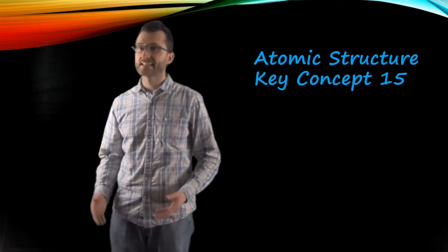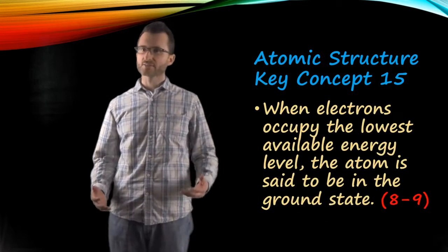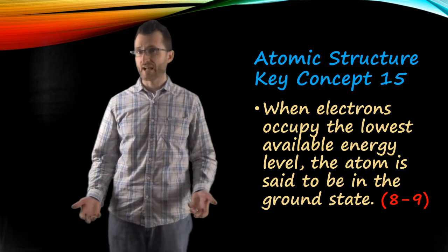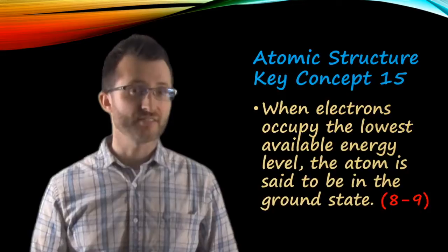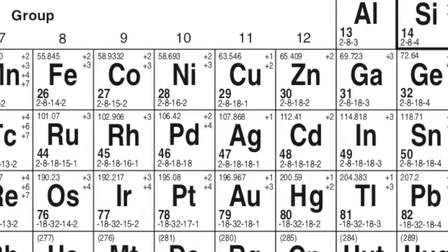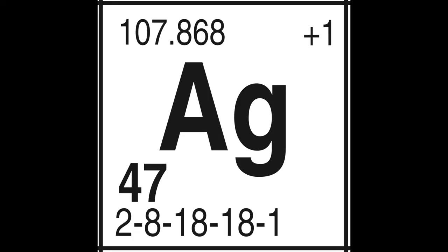Atomic structure, key concept fifteen. When electrons occupy the lowest available energy level, the atom is said to be in the ground state. Now, I want to remind you of something. When you look at your reference tables on the periodic table and you find an atom's electron configuration, automatically those electron configurations have to be in the ground state, not the excited state.